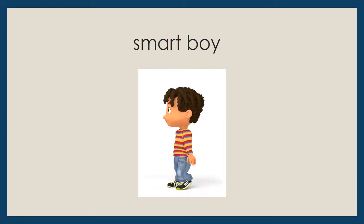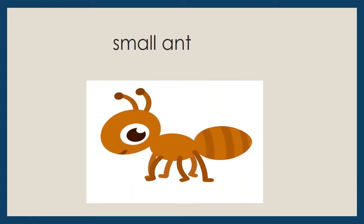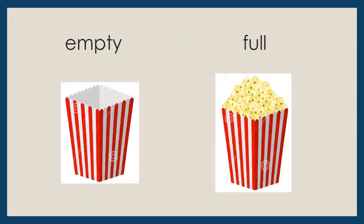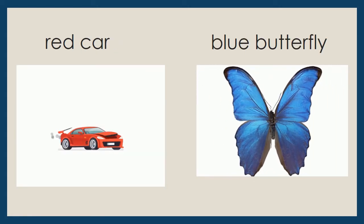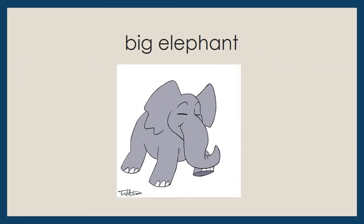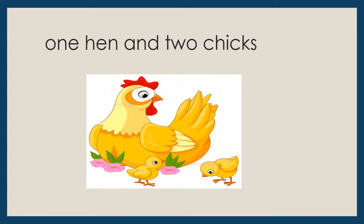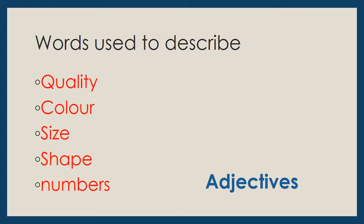For example: smart boy, small ant, empty box, full box, red car, blue butterfly, big elephant, round table, one hen and two chicks. So words used to describe quality — that is smart boy; colour — red car; size — big elephant; shape — round table; numbers — one hen, two chicks — are all adjectives.